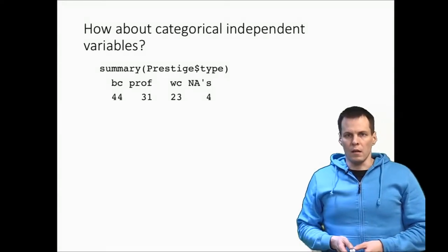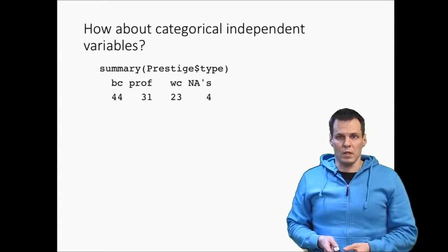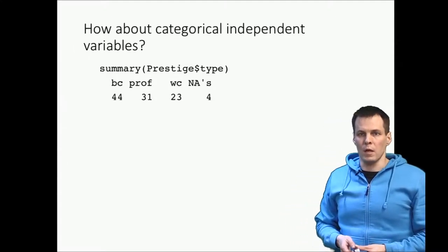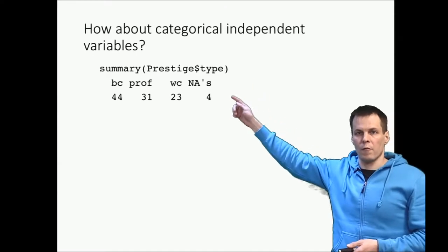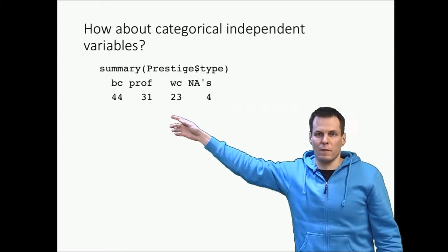So our data looks like that. When we take a summary of the prestige dataset, the variable type shows frequencies—no means or standard deviations, just frequencies of different values.